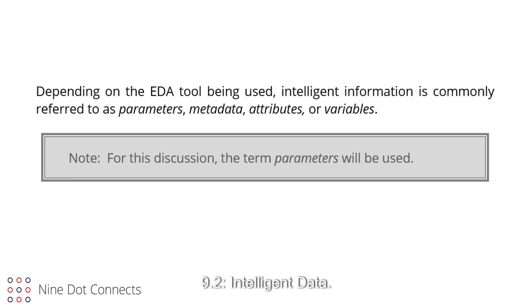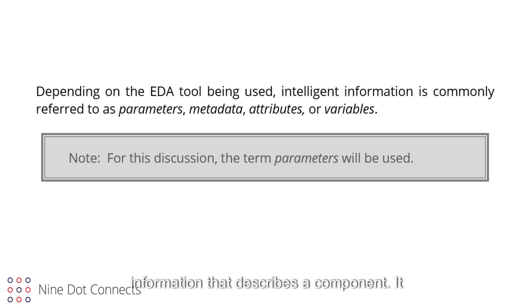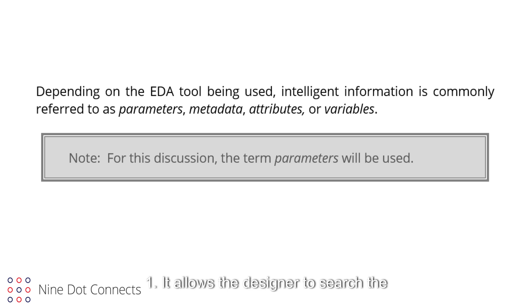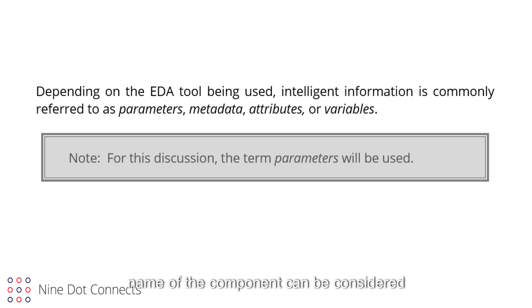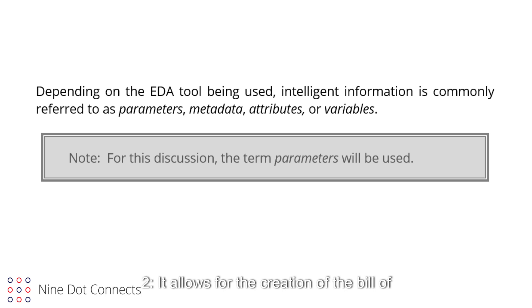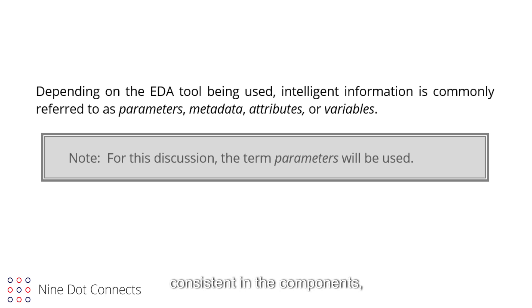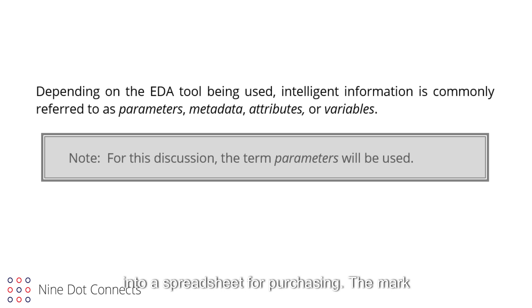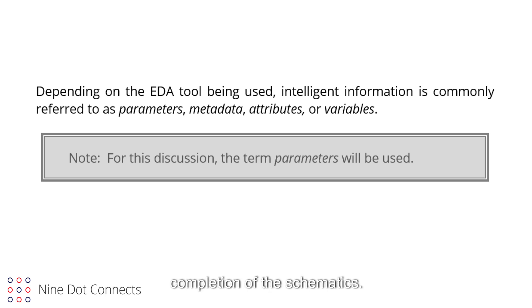9.2 Intelligent Data. Intelligent data consists of the textual information that describes a component. It serves two purposes. First, it allows the designer to search the library for components of interest — even the name of the component can be considered part of this intelligent data. Second, it allows for the creation of the bill of materials as the schematic is being designed. If the intelligent data is consistent in the components, the schematic editor can collect this data into a spreadsheet for purchasing. The mark of a good library is when the bill of materials is ready to go upon the completion of the schematics.